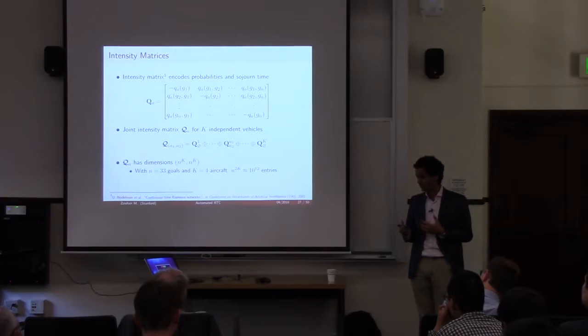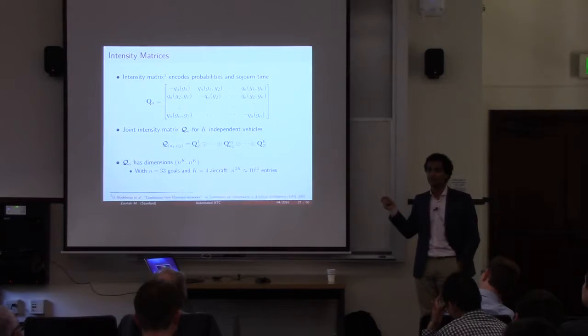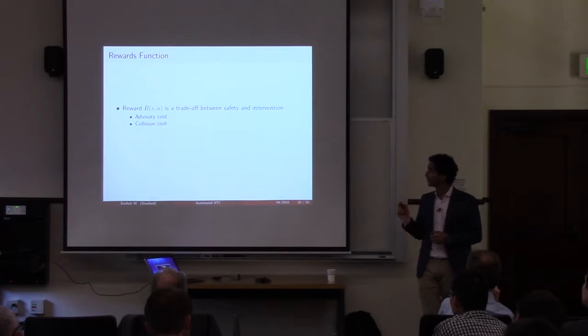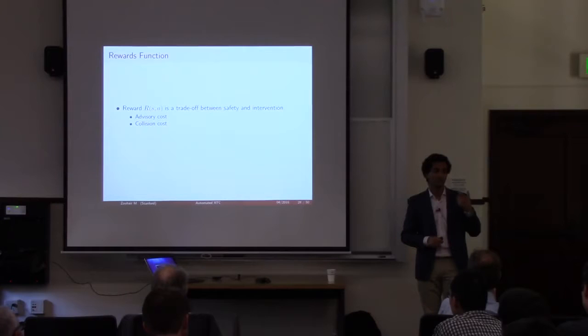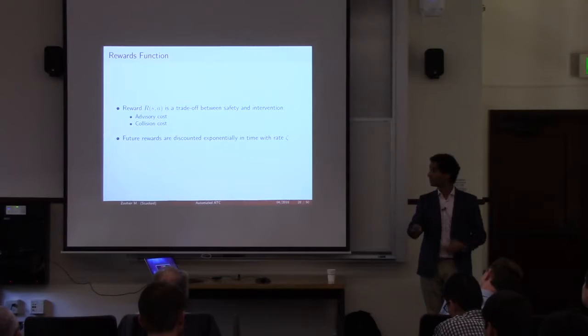These combined matrices are huge — about n to the 2K entries. While they're sparse, you still can't store them. That's just the nature of these large MDPs. I'll talk about how we use the structure of the problem to solve this efficiently. To finish defining the CTMDP, we need rewards: a trade-off between safety and intervention. There's a cost every time the system intervenes, and a cost whenever we think aircraft are going to collide. Just like in an MDP, we discount rewards using an exponential with rate zeta.